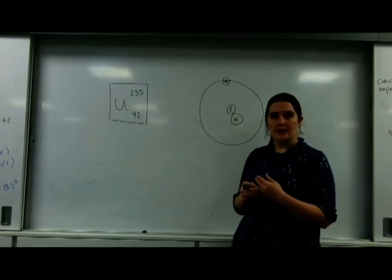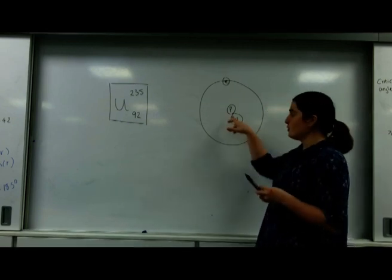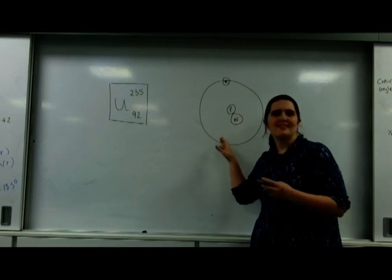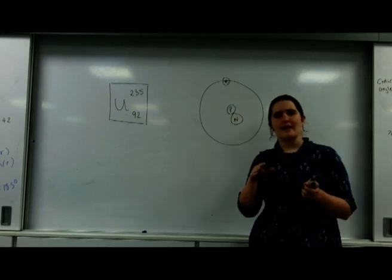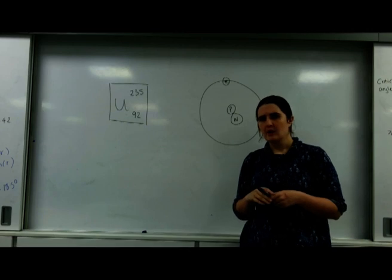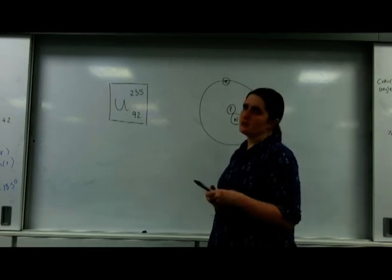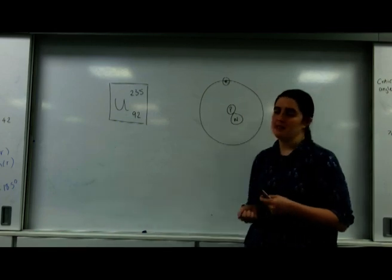At GCSE you would have been told that a proton and neutron have a mass of one, and an electron has negligible mass. We can't do that in physics anymore. We can't say these things. We actually have to be a little bit more specific.